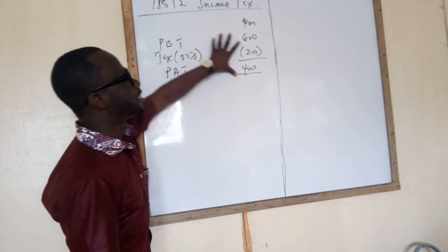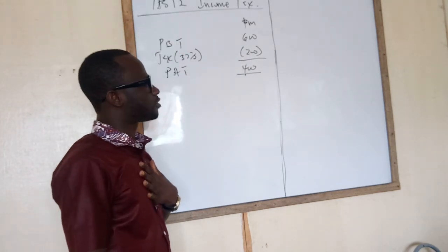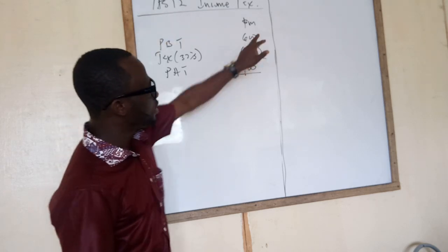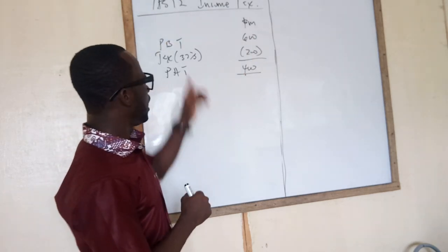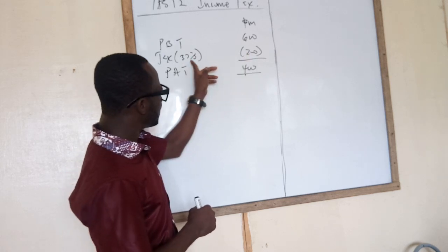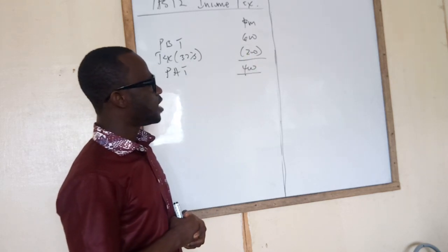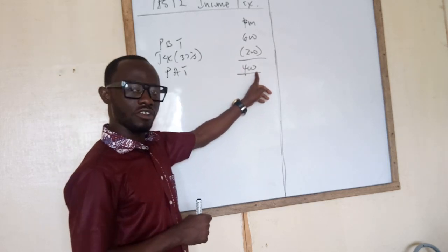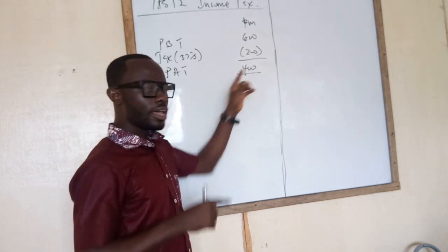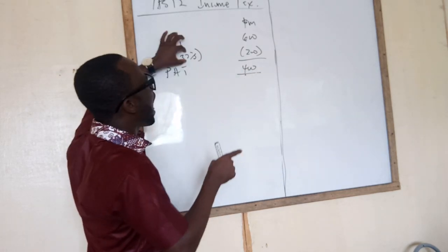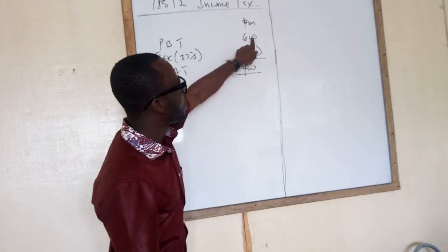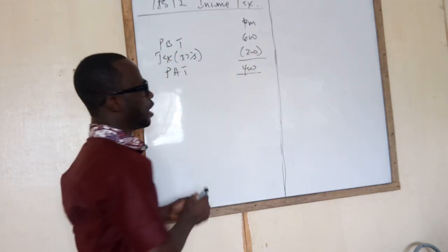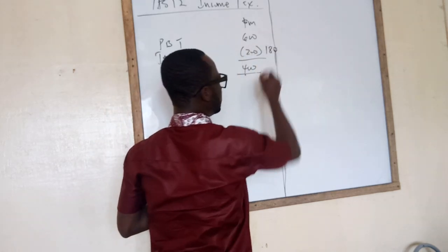Let's say this is our income statement extract. We have profit before tax of $600 million, and the tax at 30% — I put there $200 million — giving profit after tax of $400 million. Now, if you calculate 30% of $600 million, it is not $200 million; rather, it is $180 million.